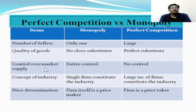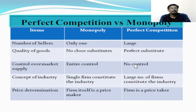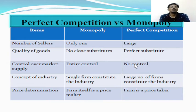Another difference relates to control of market supply. As there is only one single firm under monopoly market who is producing a good that doesn't have any close substitutes, that firm controls the entire market supply and itself constitutes the industry. There is no conceptual difference between firm and industry under monopoly. But under perfect competition, no single firm has the authority or influence to control the entire market supply.